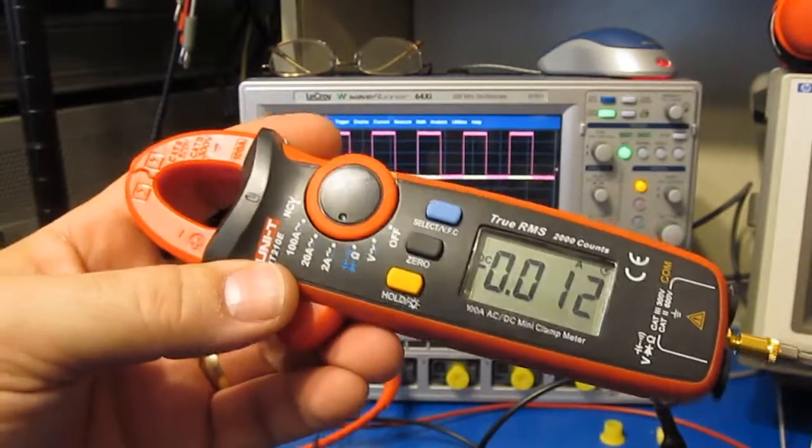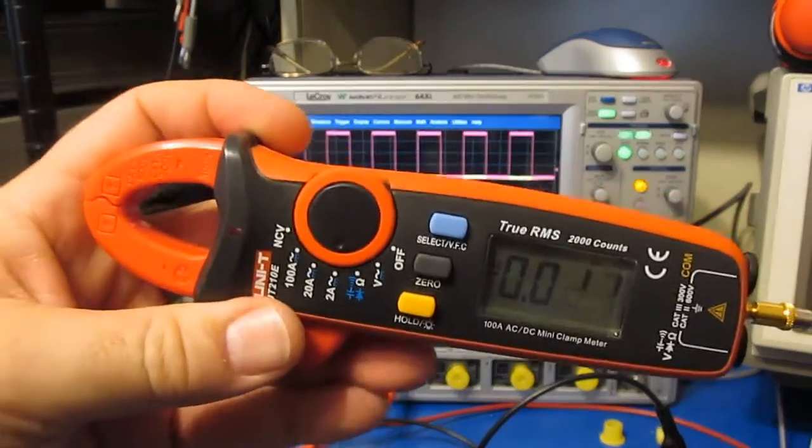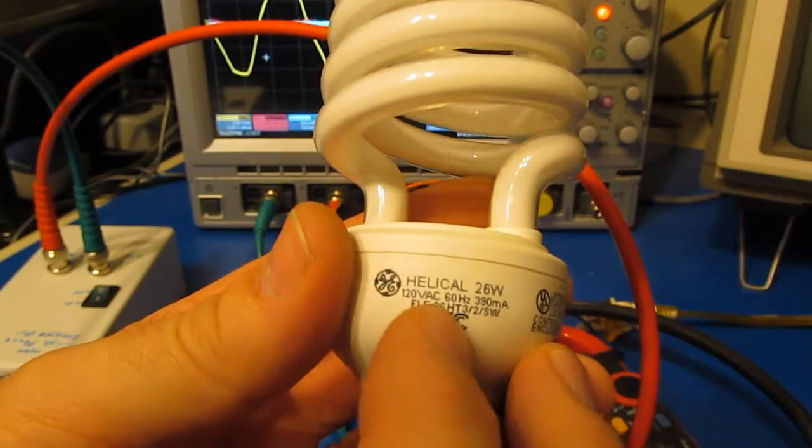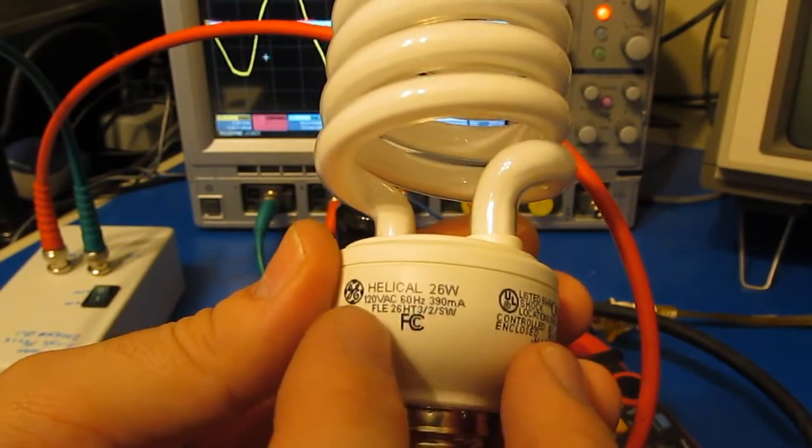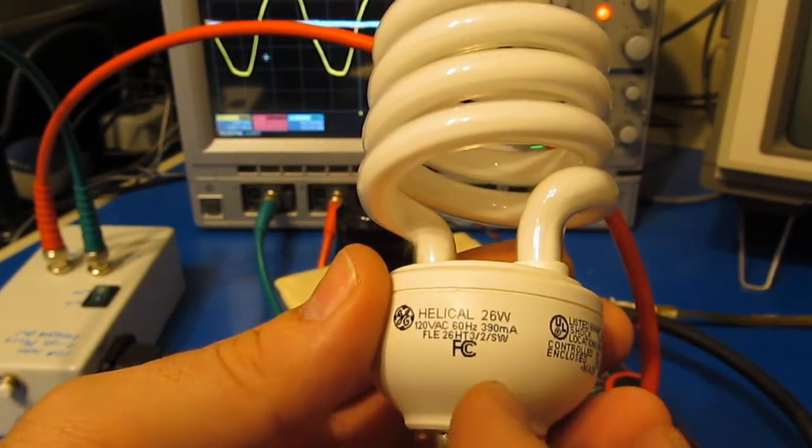Again I'll provide a link to the information I collected about the meter, so if you do decide to undertake this mod at least you have kind of a place to start. This is a GE bulb, it's a helical 26 watts, 120 volts, 60 Hertz, 390 milliamps.